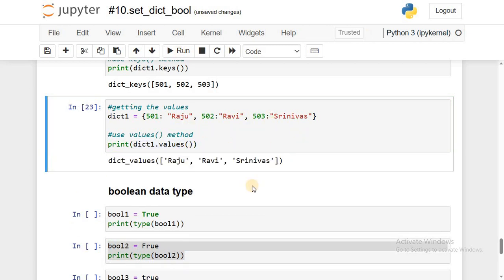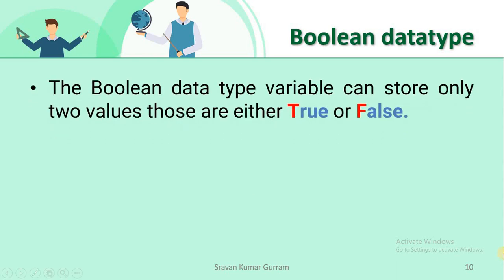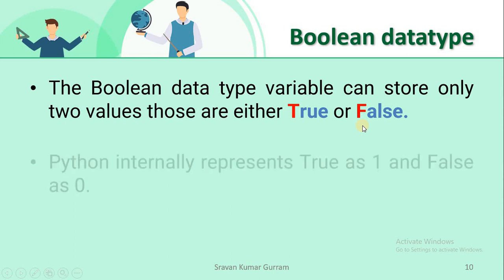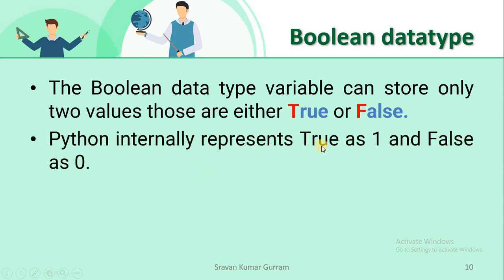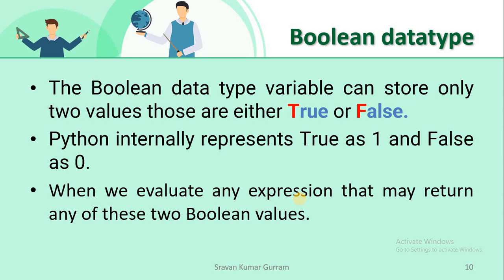The next data type is boolean. A boolean variable can store only two values: True or False. Any boolean variable can store either True or False — these are the only two valid values. Very importantly, in True and False, T must be a capital letter and F must be a capital letter, because these are keywords. Writing lowercase t or lowercase f is invalid.